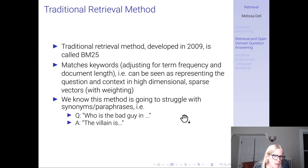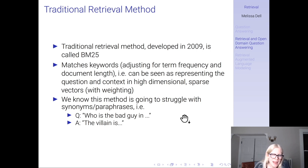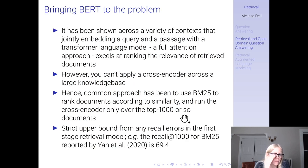The traditional retrieval method developed in 2009 is BM25. BM25 matches keywords, adjusting for term frequency and document length. It can be seen as representing the question and the context in a high-dimensional sparse vector space with weighting. We know that sparse vector and keyword methods are going to struggle with synonyms and paraphrases — so 'who is the bad guy' versus 'the villain is' — a sparse method based on term frequencies is not going to understand that 'bad guy' and 'villain' are the same thing because they're not literally the same term.